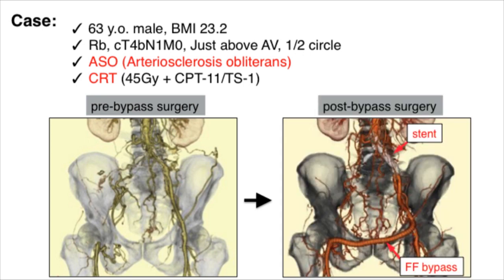Before cancer treatment, revascularization of the left iliac artery was performed. A vascular stent was inserted into the left common iliac artery. Furthermore, femoro-femoral bypass surgery using an artificial blood vessel was performed from the left femoral artery to the right femoral artery.